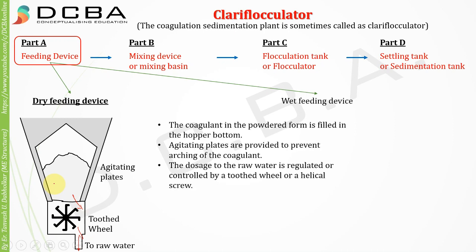The coagulant in powdered form is filled in the hopper bottom. Agitating plates are provided to prevent the arching of the coagulant — arching is when the powder hardens due to moisture. These agitating plates keep the coagulant moving, thus preventing arching. The dosage to the raw water is regulated by a toothed wheel or helical screw.